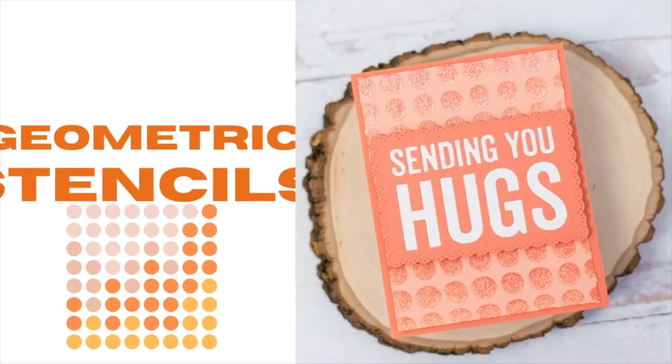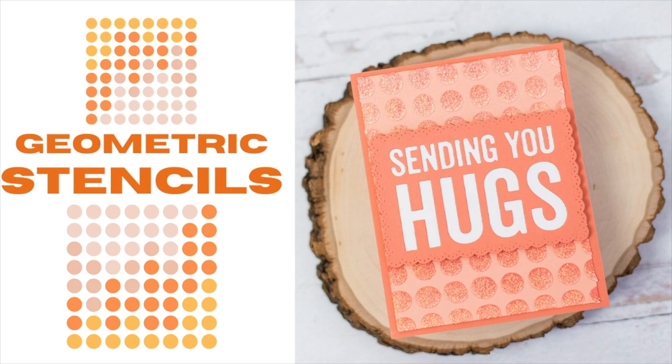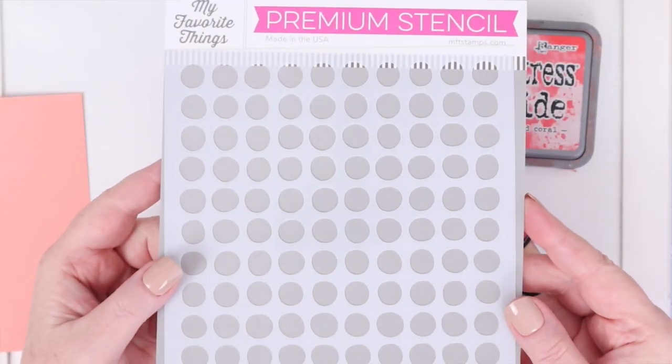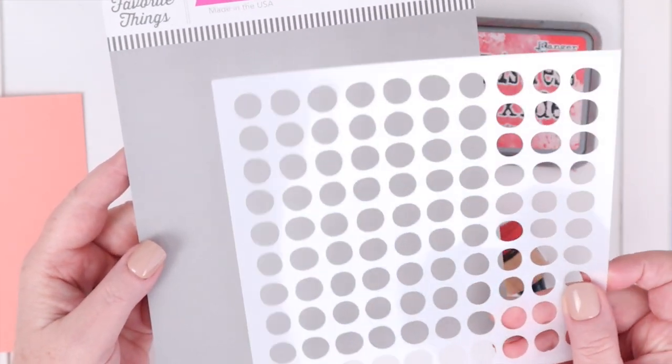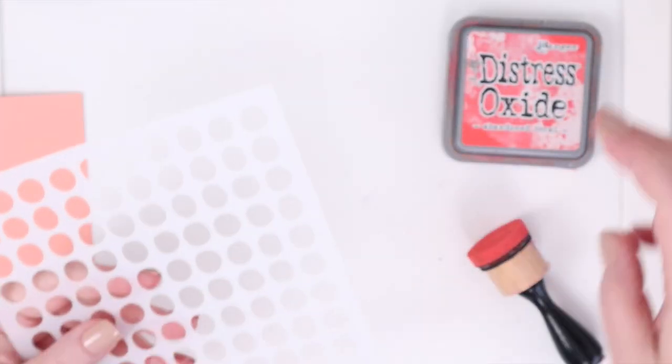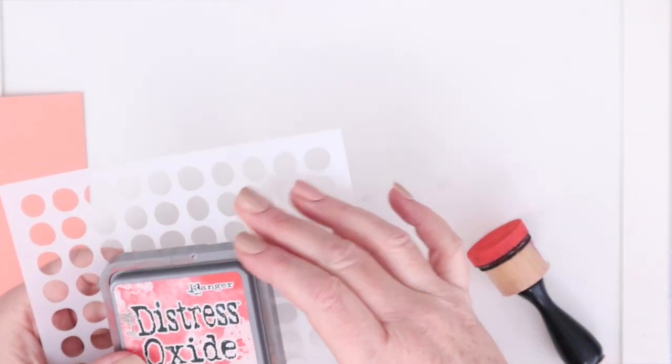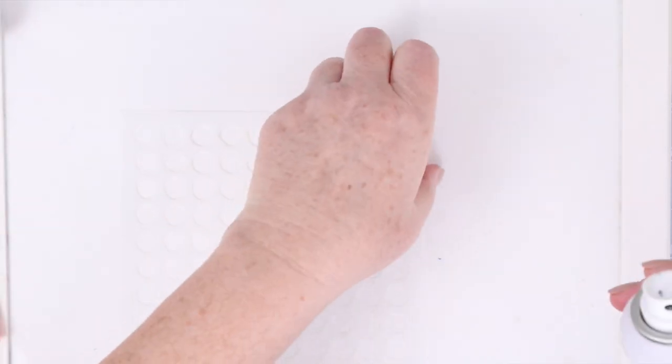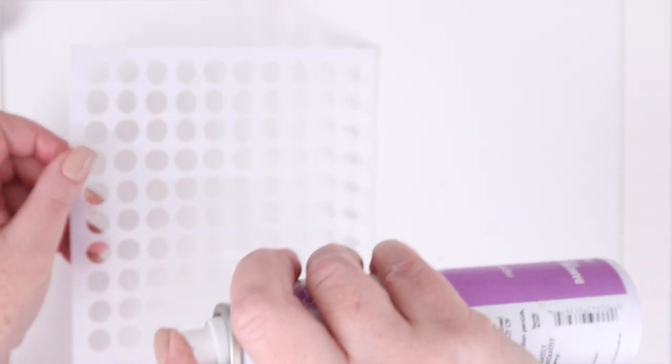Of course, stamps and dies are not the only way to create geometric looks. You can also use stencils. There are tons of geometric stencils on the market featuring squares, triangles, lines, and more. Recently I grabbed this My Favorite Things Wonky Dots stencil. With it, I'm going to use Distress Oxide Abandoned Coral ink and a foam ink blender. I'll also be using Therm O Web's Pixie Spray to hold the stencil in place, and I'm working on my Waffle Flower water media mat.